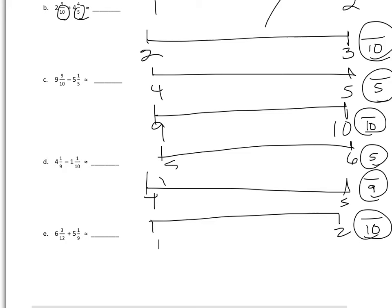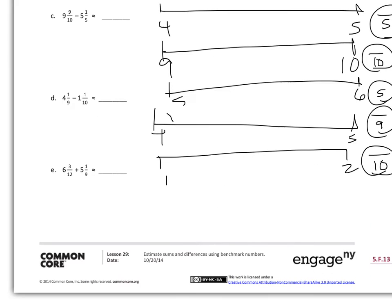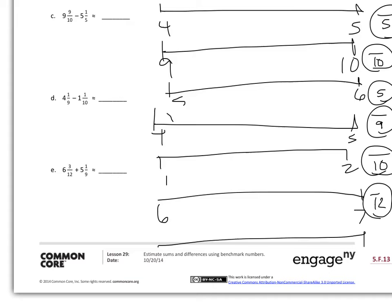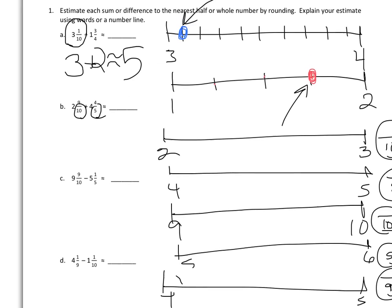For problem E, they're going to draw between 6 and 7, breaking it into twelfths, and then 5 to 6, breaking that into ninths. That should help students at least get started. Once they have each number plotted on the number line, they should be able to visually see which whole number it's closer to.